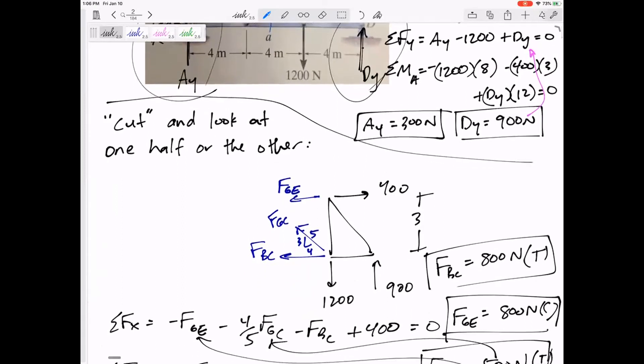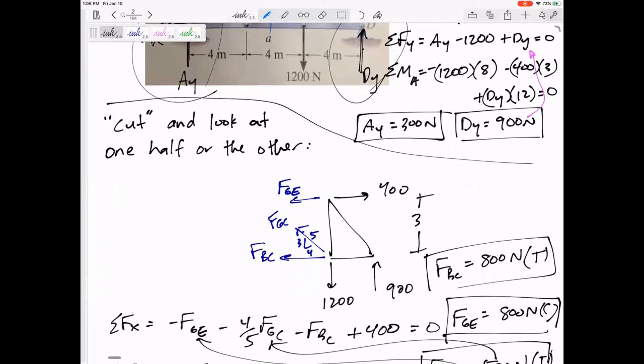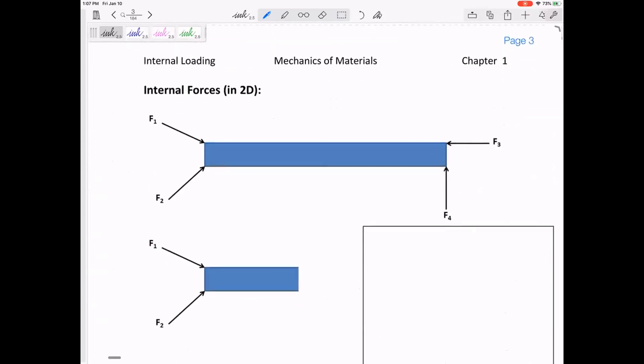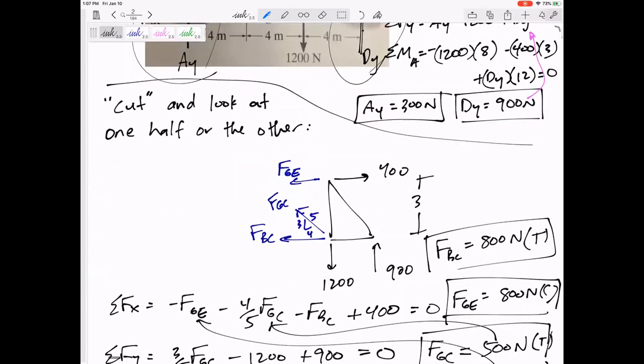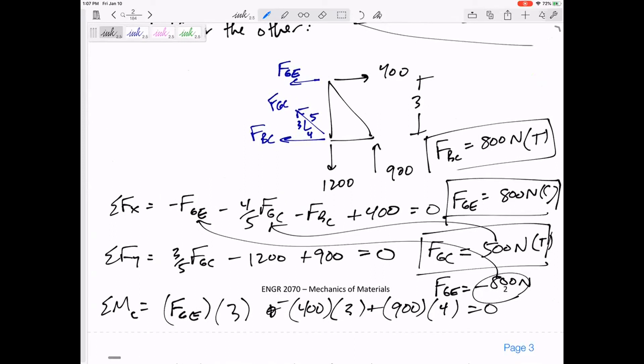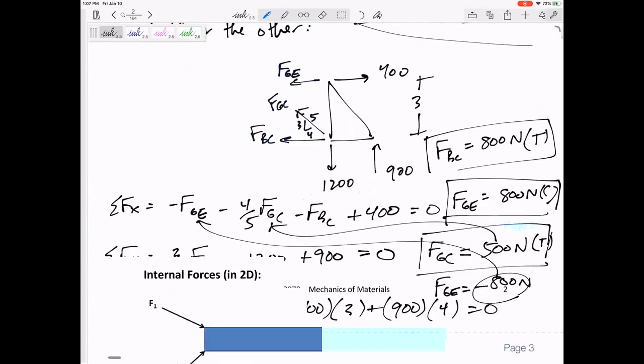Method of sections: we cut open a member and expose the only force that was in that member because it was a two-force member. But if it's more complicated, we use our equilibrium equations to solve for our unknowns. In general, if our answer comes out negative, it's because we drew it the wrong direction to begin with.